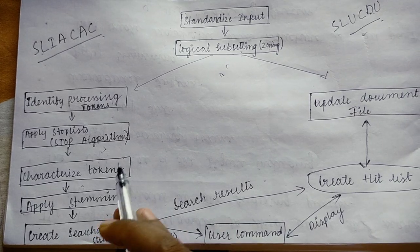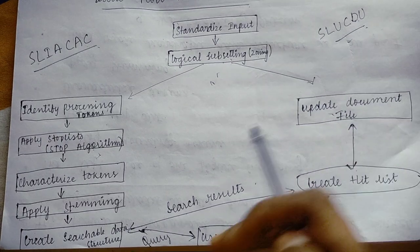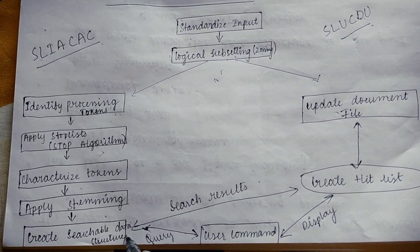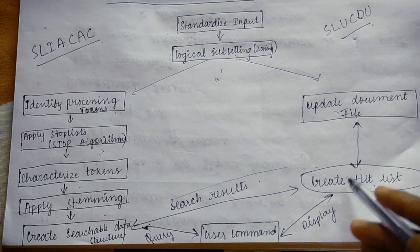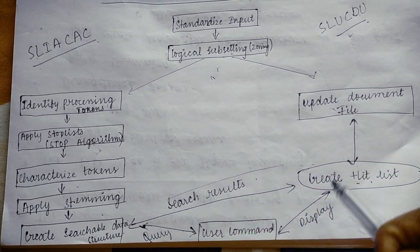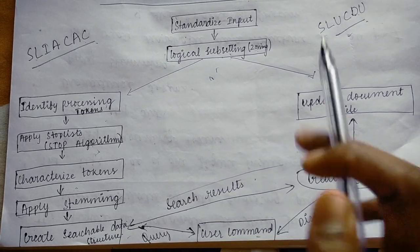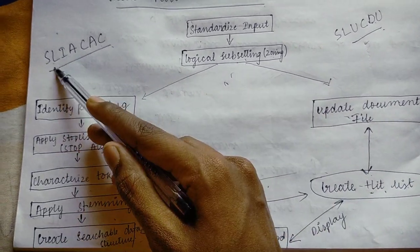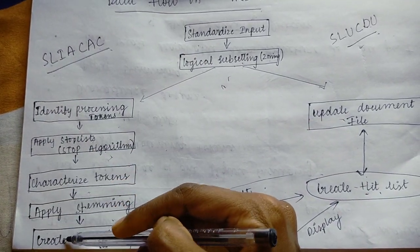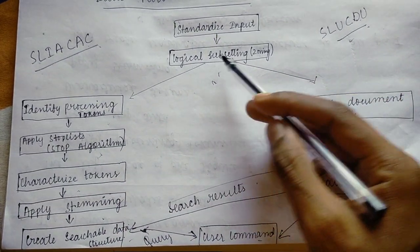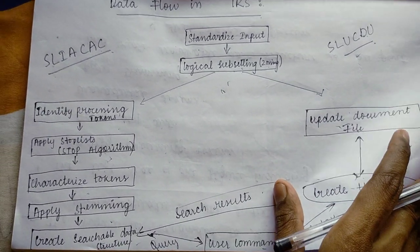After characterizing tokens, it applies stemming. Then it creates a searchable data structure. After logical subsetting, it also creates and updates a document file. After creating the searchable data structure, it generates search results and creates a hit list. Then, a query comes in and the display goes to the user. This is the complete data flow.